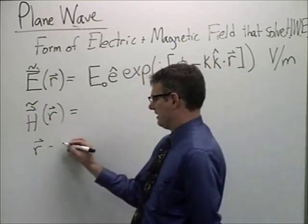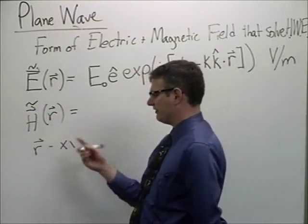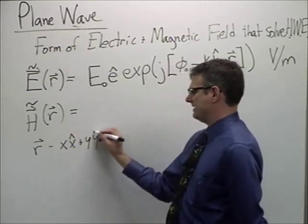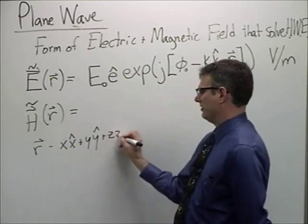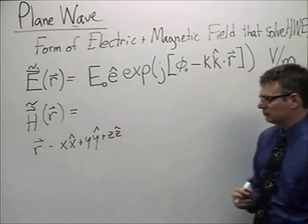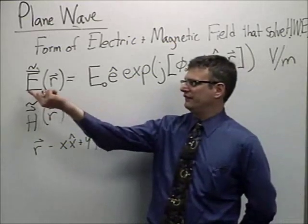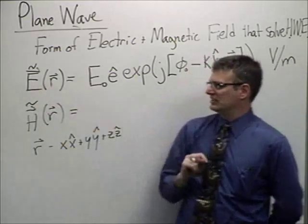My R vector, that, of course, is X, my point of observation, XYZ, where X, stick it on the X hat, Y, stick it on the Y hat, Z, stick it on the Z hat, a convenient way to keep track of where you are in space. And, of course, you read this. This is the electric field phasor vector at that point in space.